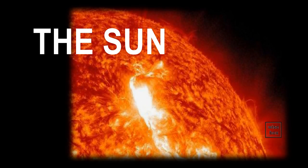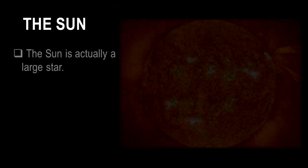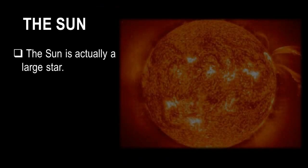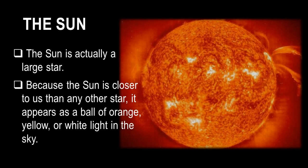The Sun. The Sun is actually a large star. Because the Sun is closer to us than any other star, it appears as a ball of orange, yellow, or white light in the sky.